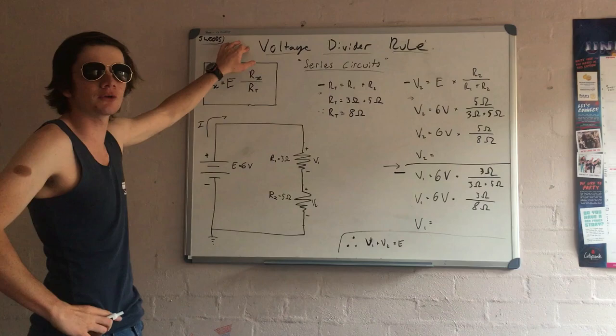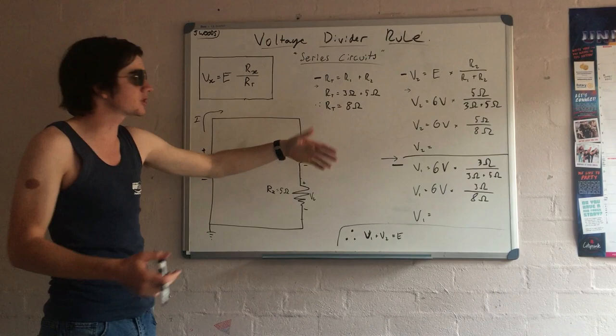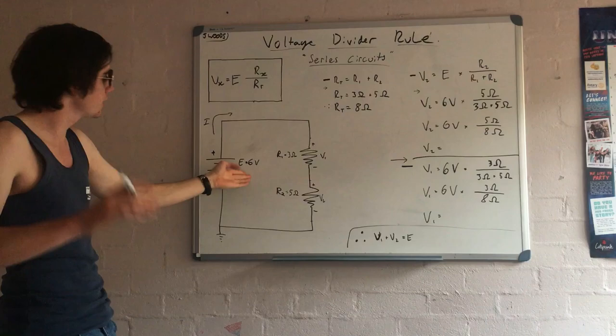Right-o, Nathan, you listen in. This is for the voltage divider rule you are asking about. You've got to do it for the series circuits, and then you get a formula, right? This formula's Vx. Vx is what you're finding. That's why it's divided up. The voltage divider rule.